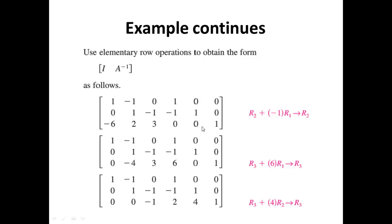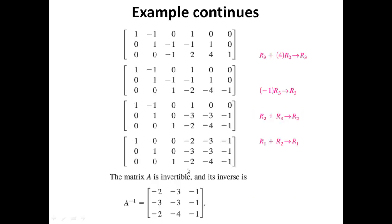So we start off the procedure using elementary row operations, and fortunately for us in this example we end up on the left hand side with the matrix I. And that simply means the matrix on the right: negative 2, negative 3, negative 1; negative 3, negative 3, negative 1; negative 2, negative 4, negative 1, is simply the inverse of A. Beautiful.